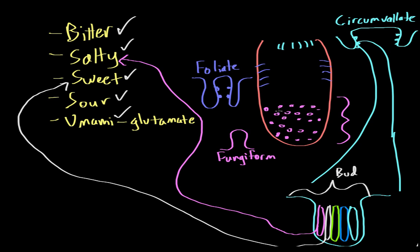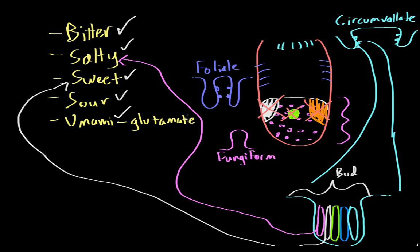We're able to taste all five different tastes everywhere on the tongue. It's not the case that bitter compounds can only be tasted in one region, salty in another, and sweet in yet another. Instead, all five compounds can be tasted throughout the entire tongue, with most taste buds concentrated in the anterior part.